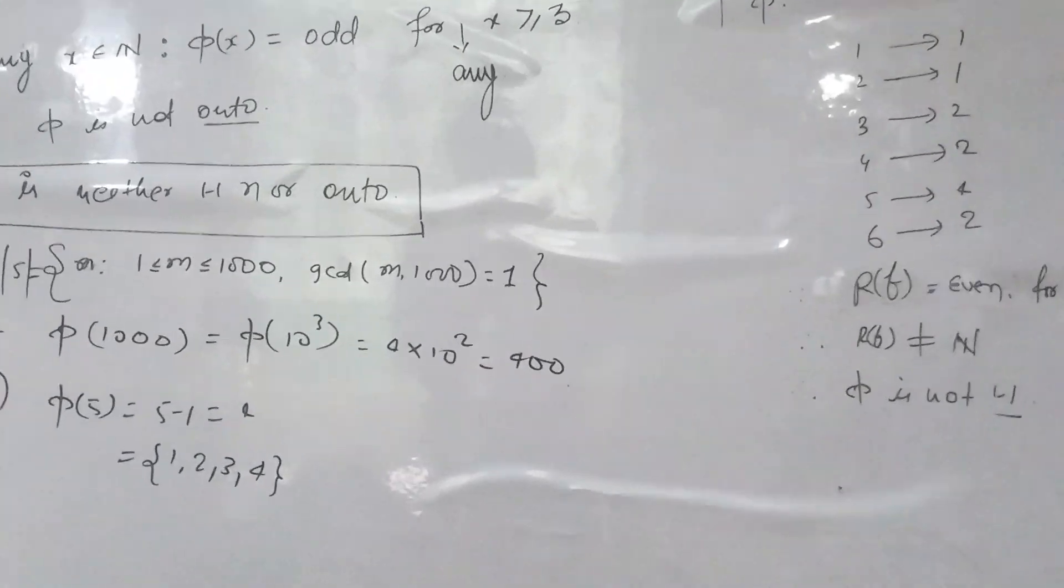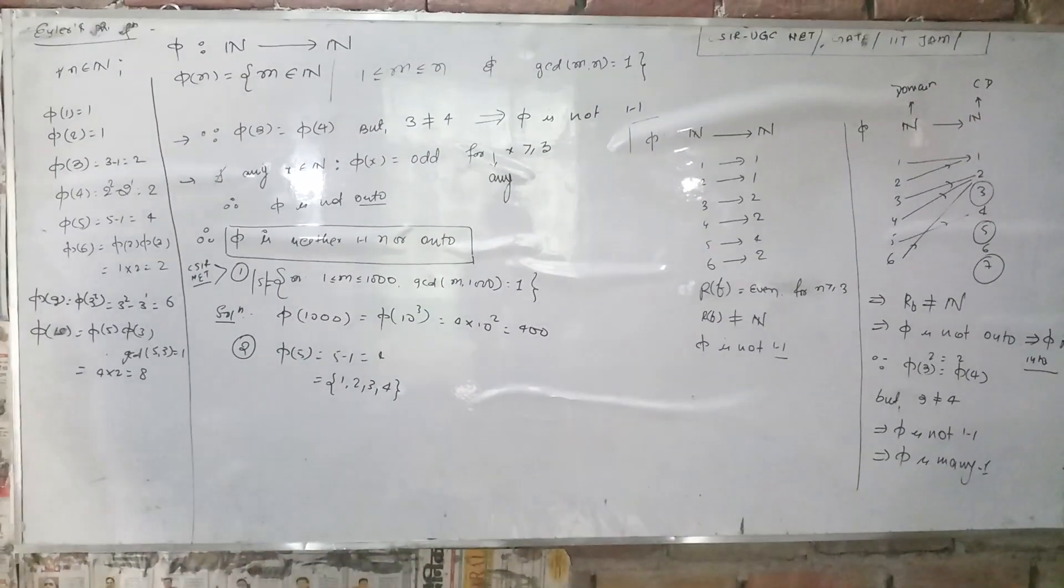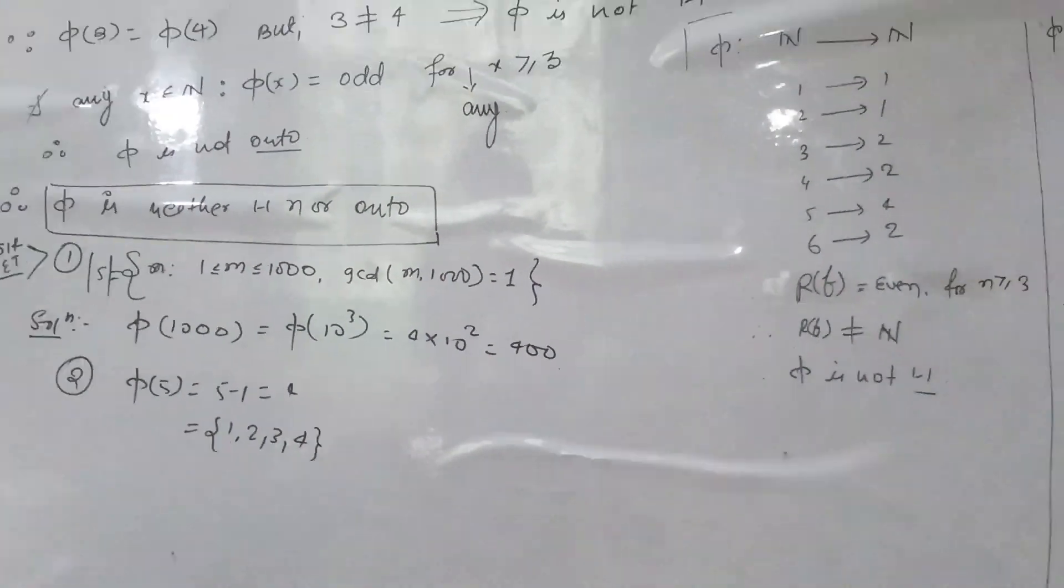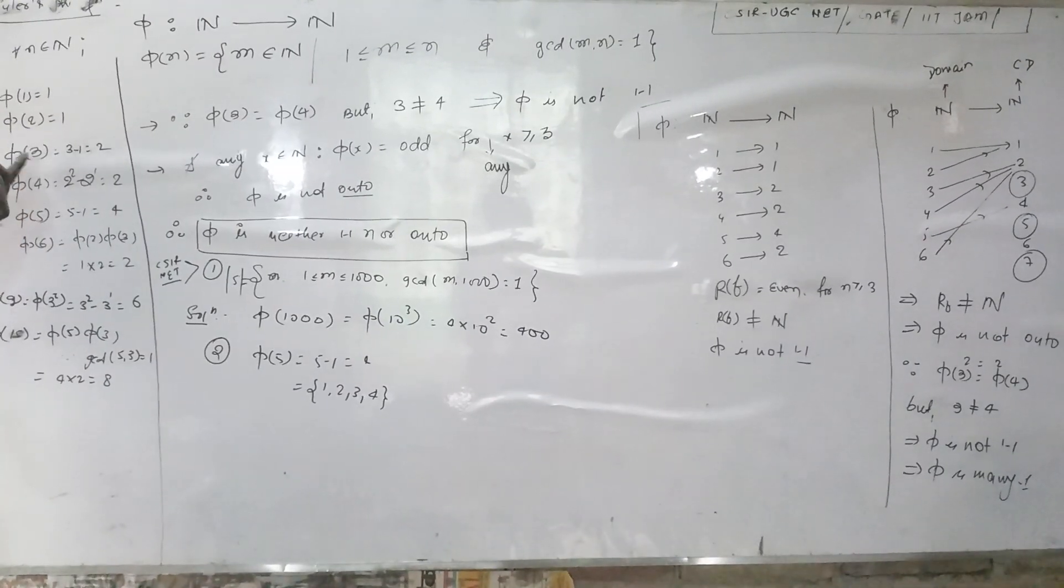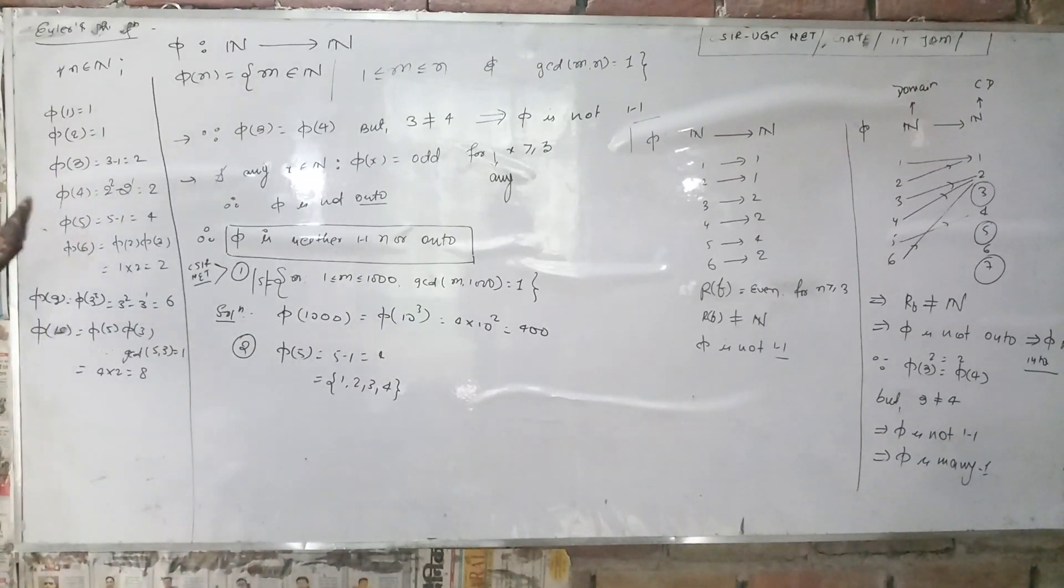Phi(4) can be written as phi(2²). Putting it into the formula phi(p^n) = p^n - p^(n-1), we get phi(4) = 2² - 2¹ = 4 - 2 = 2.